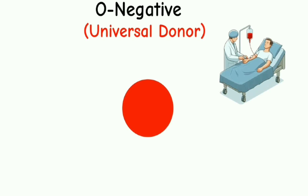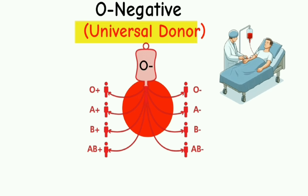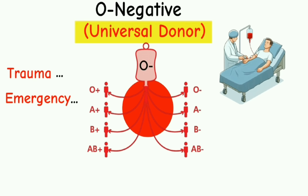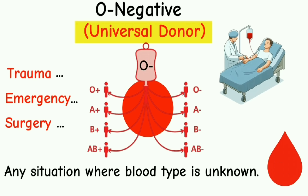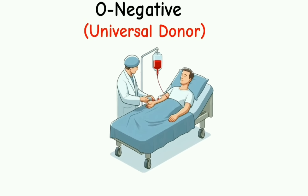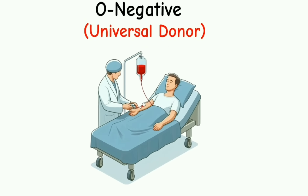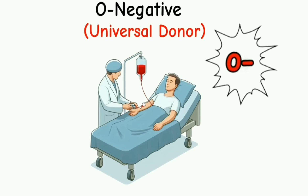That is why it is called universal donor, and often used in cases of trauma, emergency, surgery, and any situation where blood type is unknown. But people with O negative blood can only receive blood from O negative donors.